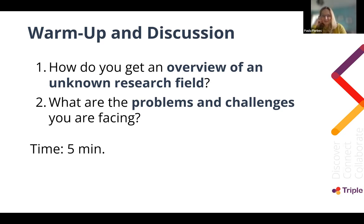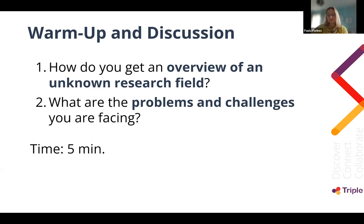For me, I think I would tend to try and find a review paper. Now that I know Open Knowledge Maps exists, of course I'd use that, because it's great for getting an overview. But before I knew it existed, I'd probably look for some kind of review paper on the subject to get an overview. It's really quite difficult, especially if it's a new topic you're moving into.